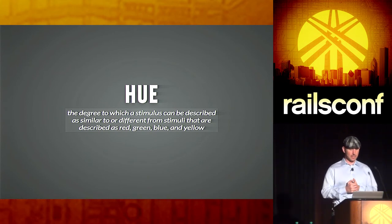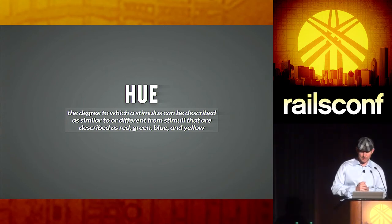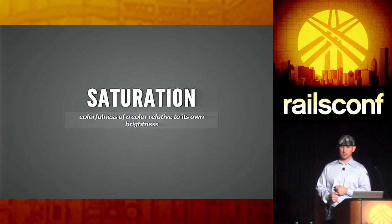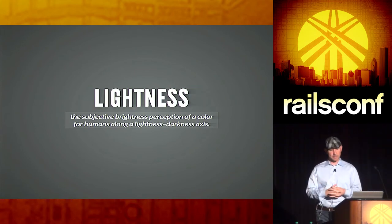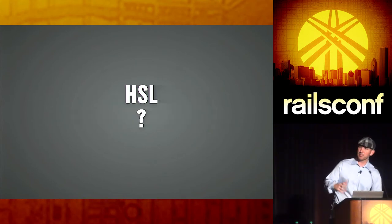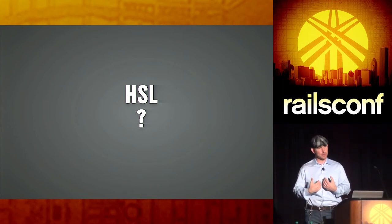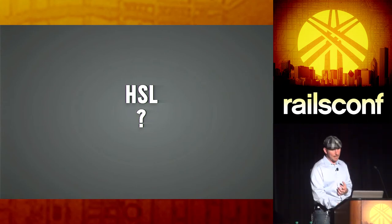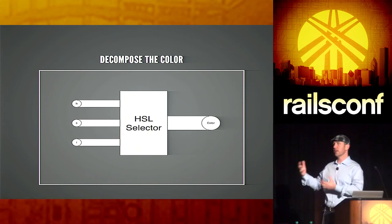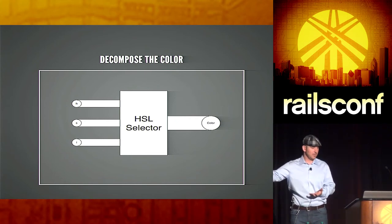I'll read briefly what these mean. Hue is the degree to which a stimulus can be described as similar to or different from stimuli described as red, green, blue, and yellow. Saturation is the colorfulness of a color relative to its own brightness. Lightness is the subjective brightness perception of a color for humans along a lightness-darkness axis. If you're like me, even though it's aimed at humans, it's completely incomprehensible. The vocabulary is about human perception but it's still a black box. What we can do is add another model and decompose those individual coordinates to see how they affect the color values.